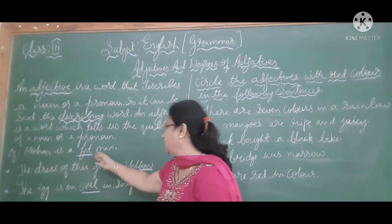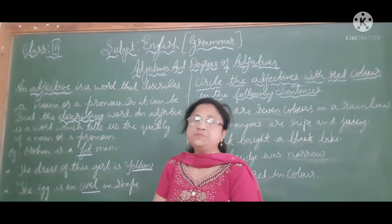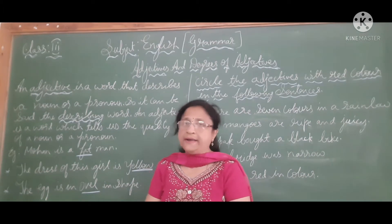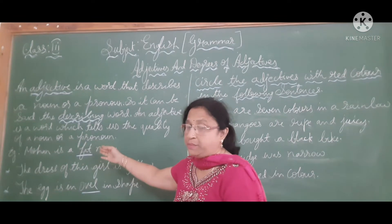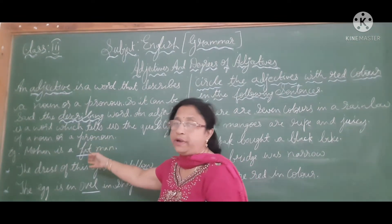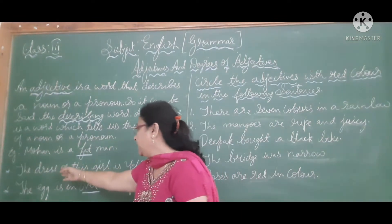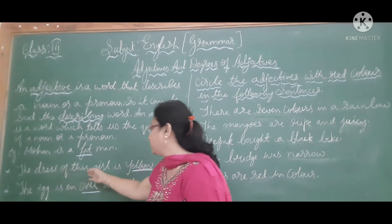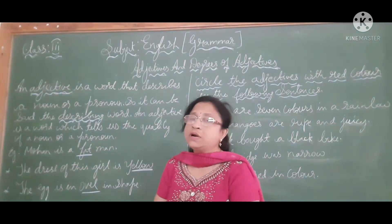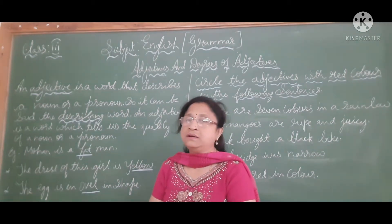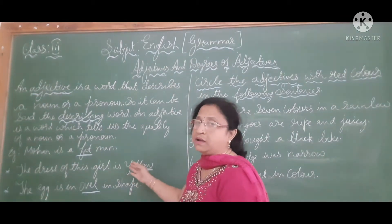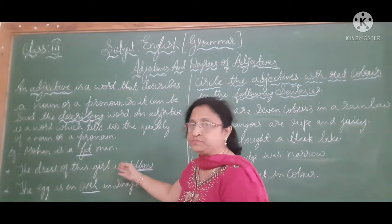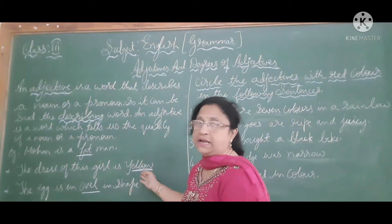Mohan is a fat man. How is Mohan? He is a fat man. Fat is an adjective because it is describing a noun — how he looks. The second example: the dress of this girl is yellow. What color is the dress? It is yellow in color. Yellow is describing the girl's dress, so yellow is an adjective here.